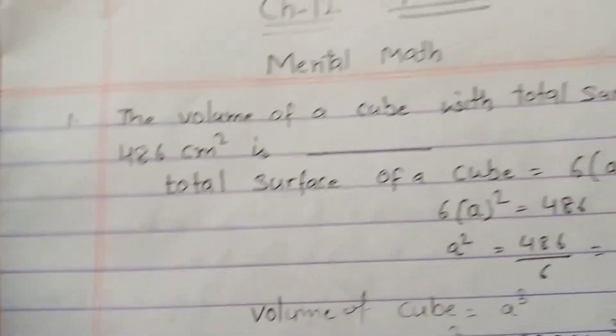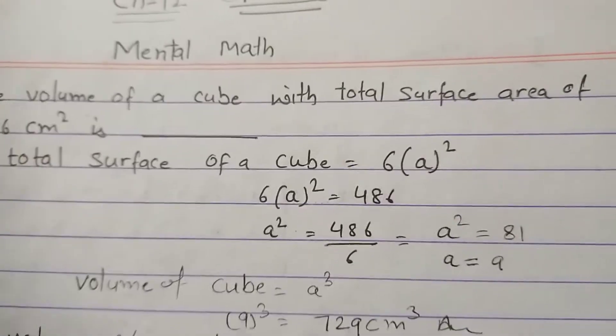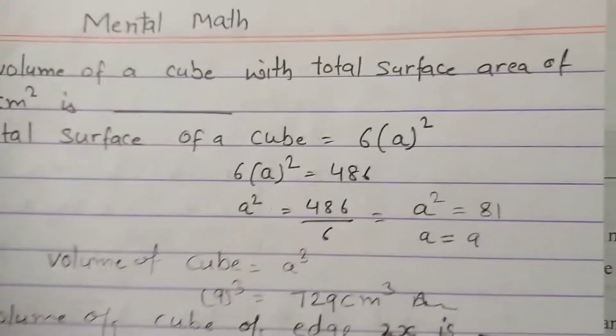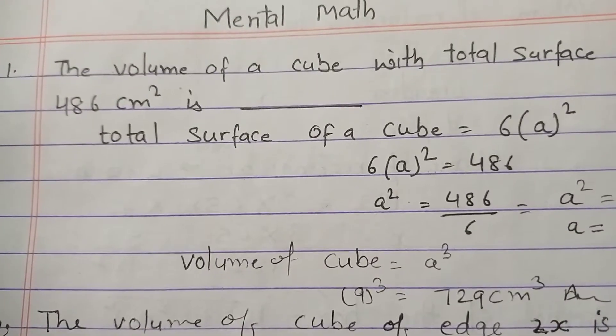My first question is: the volume of a cube with total surface area of 486 centimeter square is? So we have to tell the volume of cube which has total surface area of 486 centimeter square.